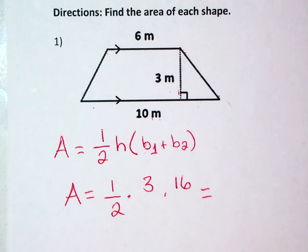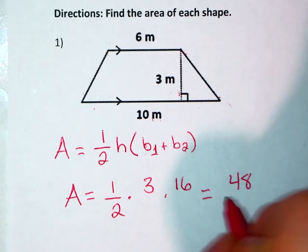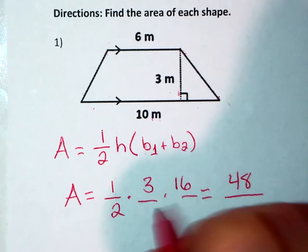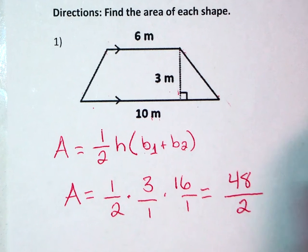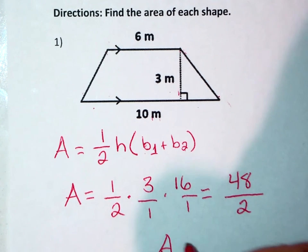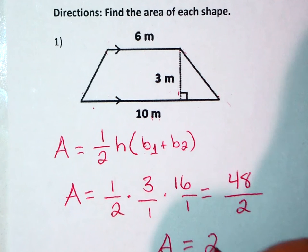When I multiply my fractions I will multiply straight across. 3 times 16 equals 48. 2 times 1 times 1 is 2. So my area for this trapezoid is A equals 24 meters squared.